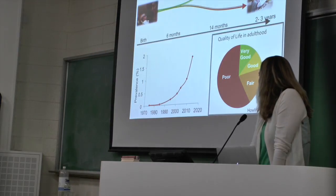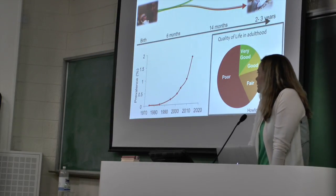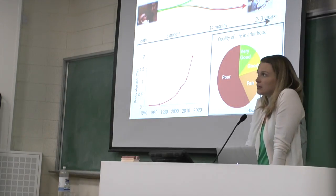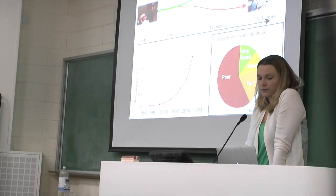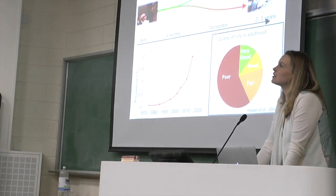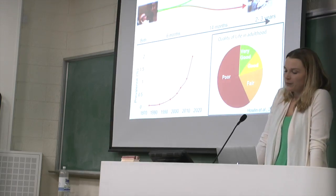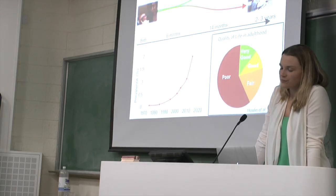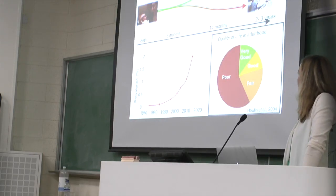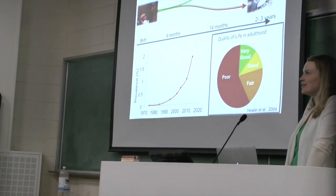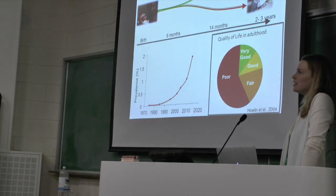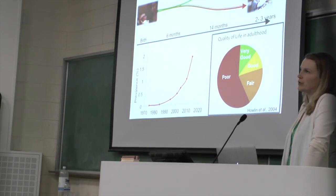Data from 2004 suggests — and the picture hasn't changed hugely — that a lot of adults with autism report their quality of life can be limited. Many adults with autism don't live independently or hold jobs. Of course lots do, and there's big variability, but there's still a substantial number who would appreciate support in reaching more optimal outcomes. This is the background motivation for focusing on early development and trying to provide earlier interventions to prevent more negative symptoms from emerging.